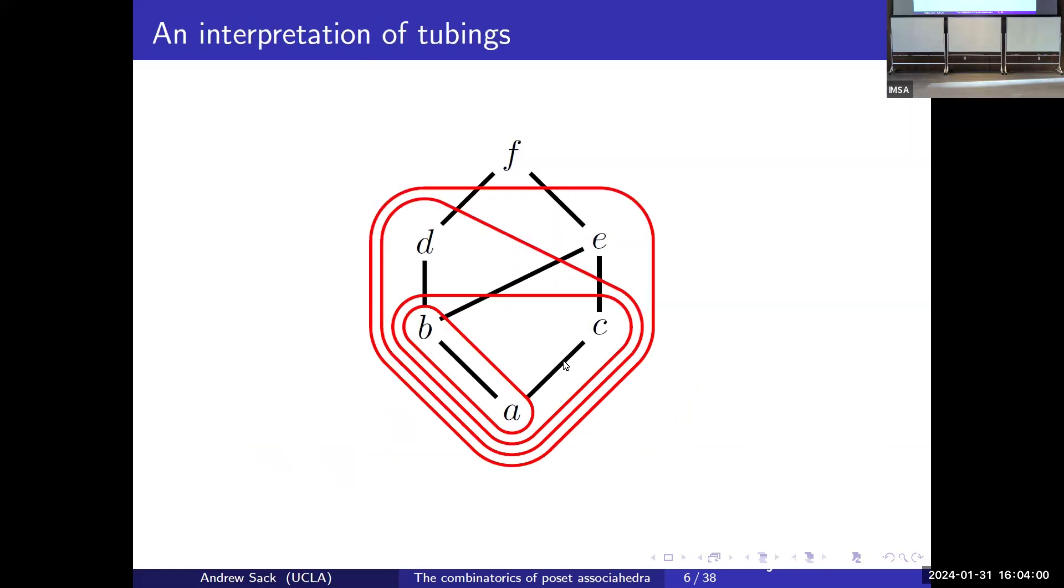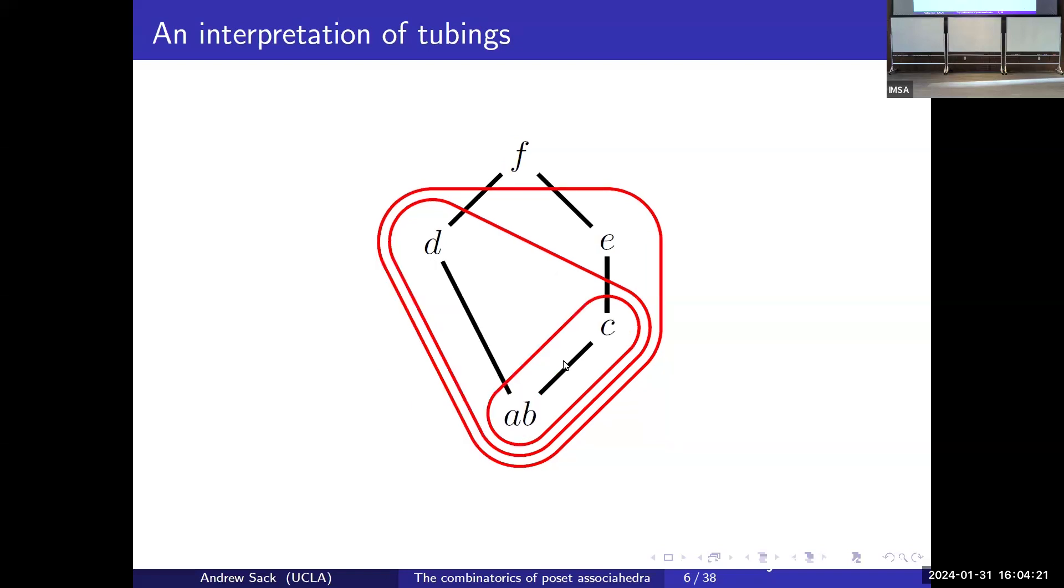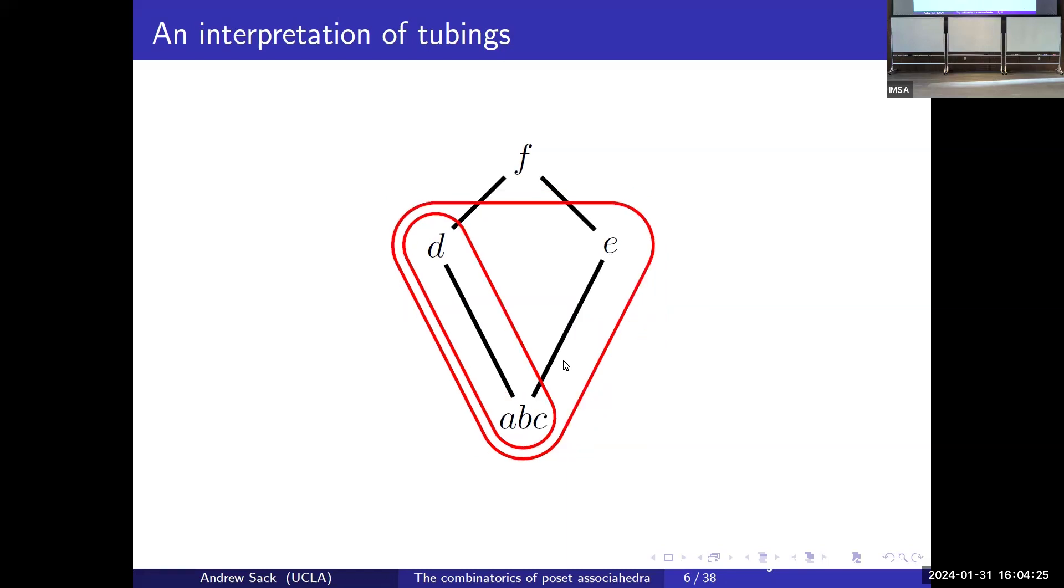What hopefully is clear is that poset associahedra generalizes associahedra when we take the poset to be a chain in the most direct possible way. The tubes look exactly like bracketed parentheses. To emphasize this interpretation of tubings, here I have a maximal tubing on this poset. We can think of this as whenever we have a tube, we should contract along that tube and take the quotient of the poset.